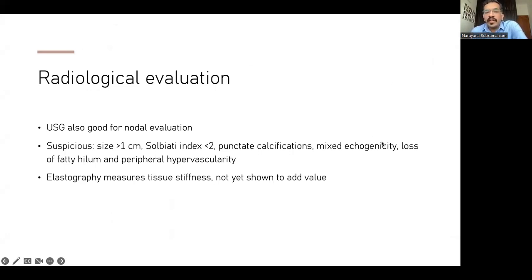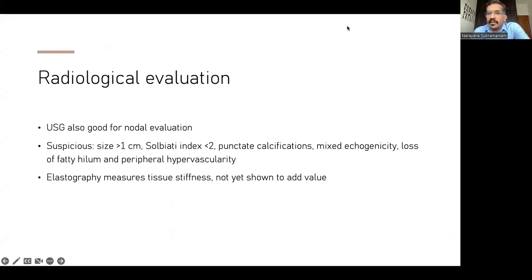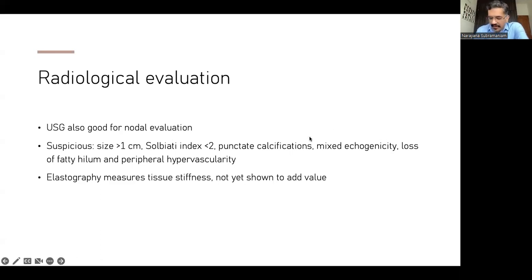Ultrasounds are also good for nodal evaluation. For lymph nodes, suspicious features include size over 1 cm, Solbiati index less than two (indicating a rounded node), punctate calcifications, mixed echogenicity, loss of fatty hilum, or peripheral hypervascularity — these are quite suspicious for harboring nodal metastasis. If you see punctate calcifications in the lymph node, it's likely you'll see calcifications in the thyroid primary as well.